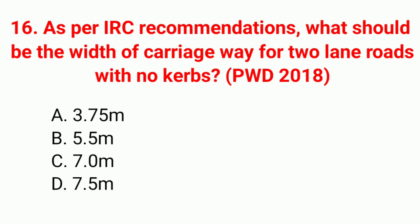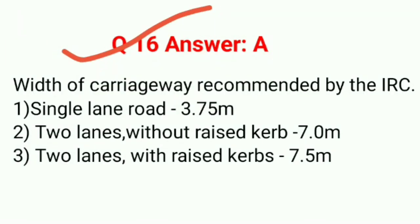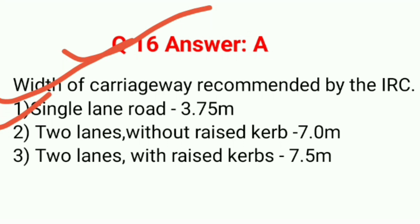Question 16: As per IRC recommendation, what should be the width of carriageway for a two-lane road with no kerb? Correct answer option A: 3.75 m... wait — the answer is 7 m. Width of carriageway by IRC: single lane road = 3.75 m; two lanes without raised kerb = 7 m; two lanes with raised kerb = 7.5 m. Answer is A (referring to the 3.75 m single-lane value in the table shown).